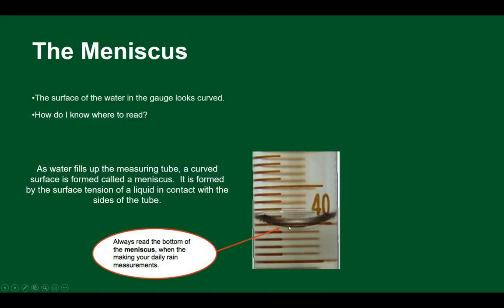One cool thing to note — when you get real rainwater there's a little bit of dirt in it, and you end up with what's called the meniscus. It's a curved feature where water sticks to the inner tube and gravity pulls the center down. You can sometimes see little beads of water sticking to the outside of the inner tube. We always want to measure from the bottom of the meniscus — the water might take up about two hundredths of an inch, so we look at the very bottom and measure from there.